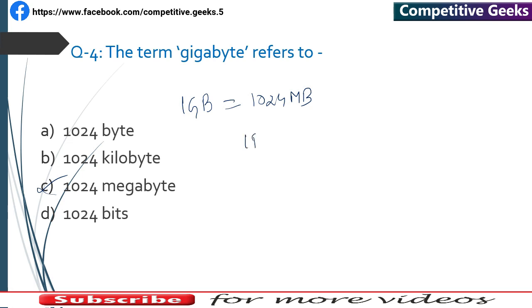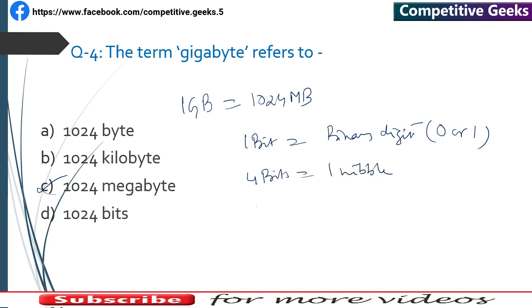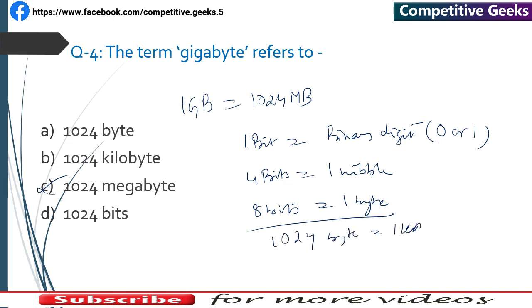Our smallest unit is a Bit — 1 bit is a binary digit, either 0 or 1. 4 bits make 1 Nibble, and 8 bits make 1 Byte. 1024 Bytes make 1 Kilobyte (KB), 1024 KB make 1 Megabyte (MB), and 1024 MB make 1 Gigabyte (GB).